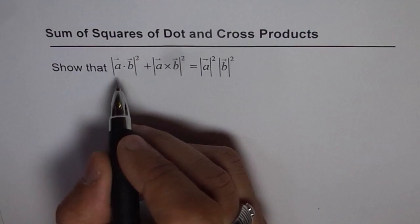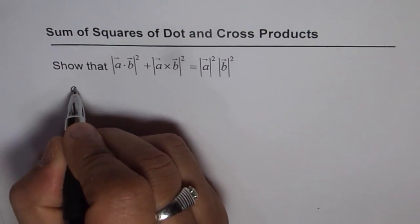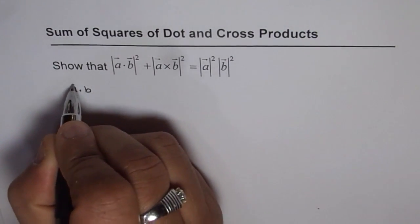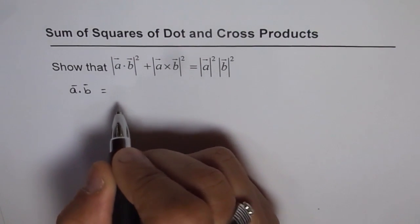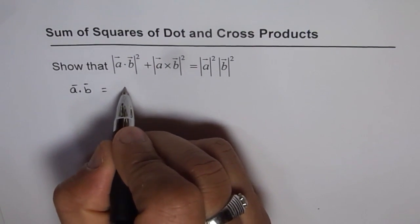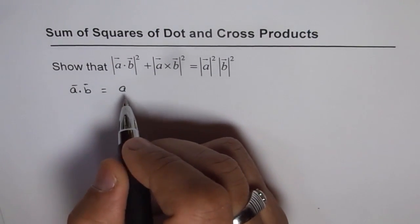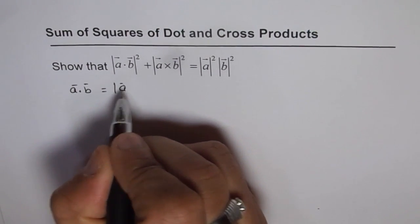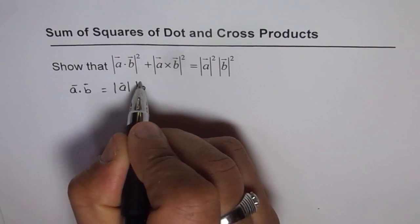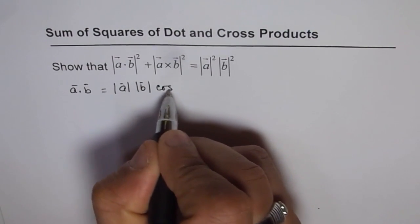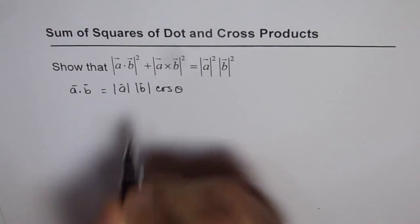Now to show that, let's see what is A dot B. So A dot B is basically, if the angle is theta between the two, then A dot B is magnitude of A times magnitude of B times cosine of theta, where theta is the angle between the two vectors.